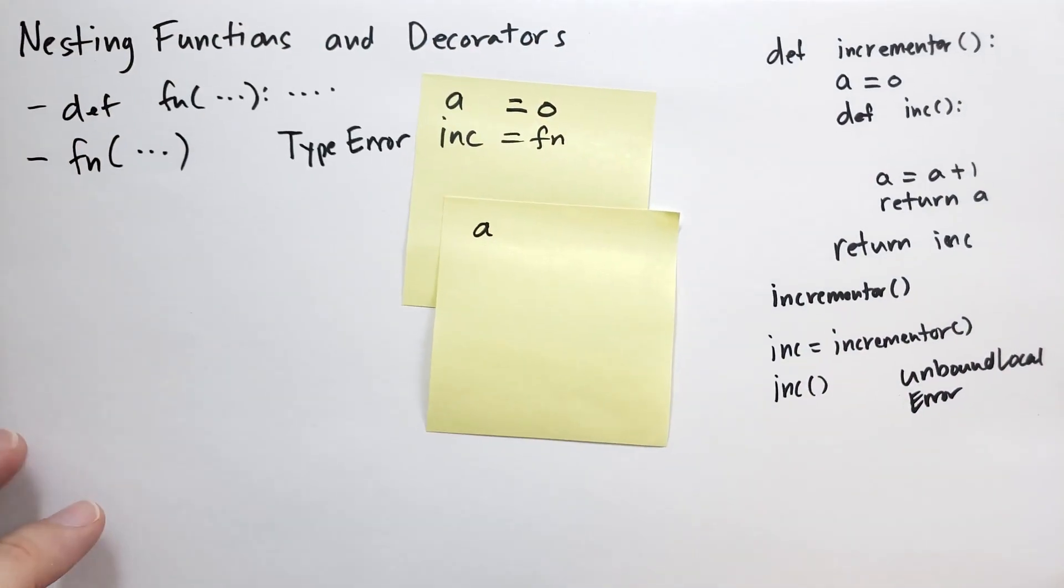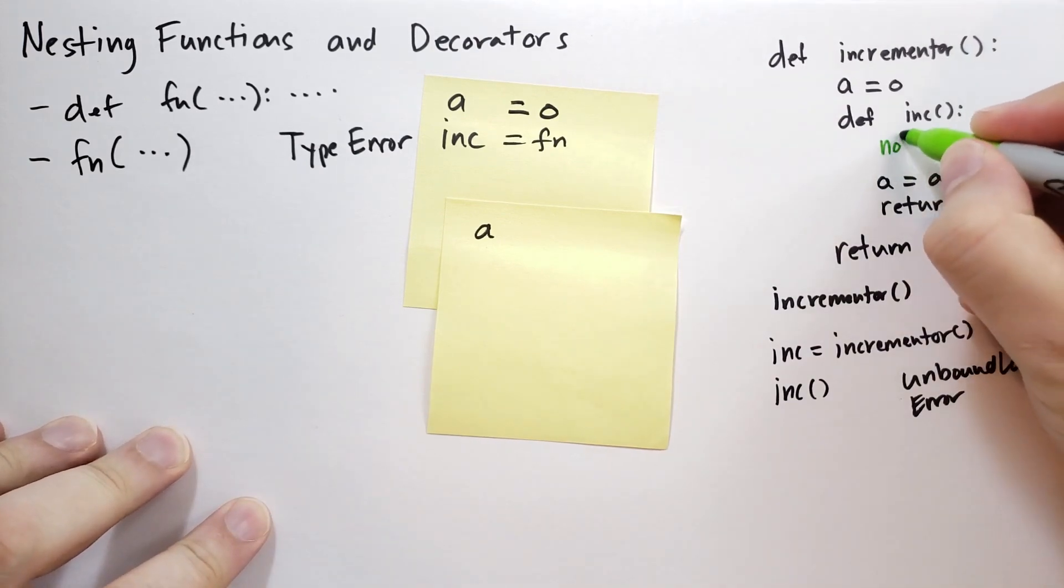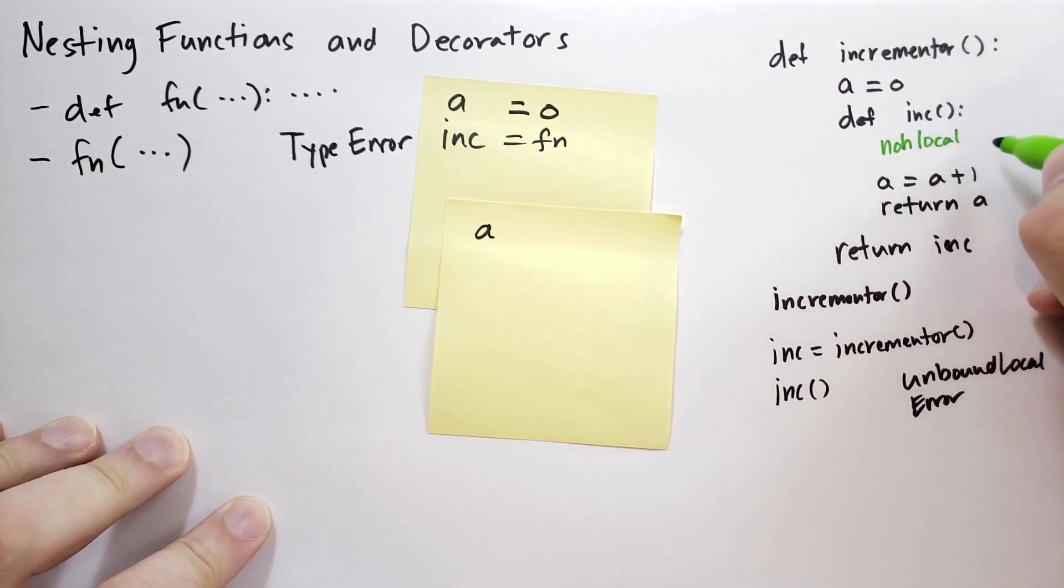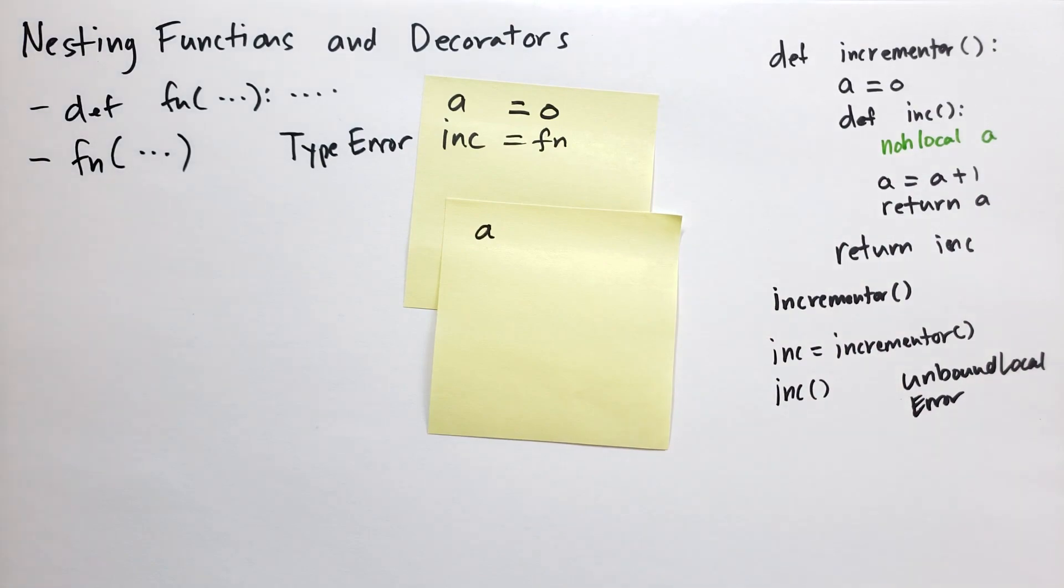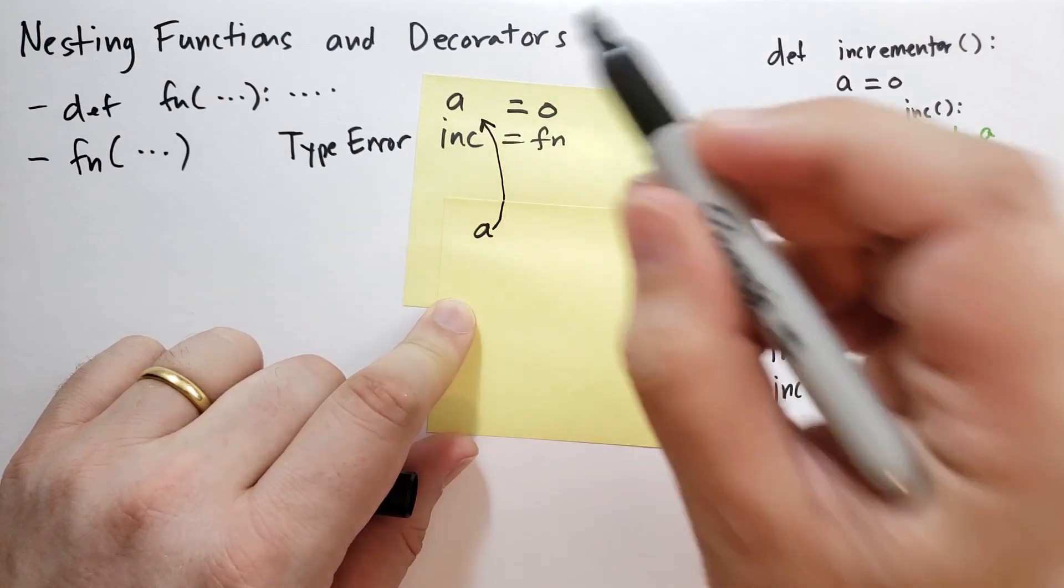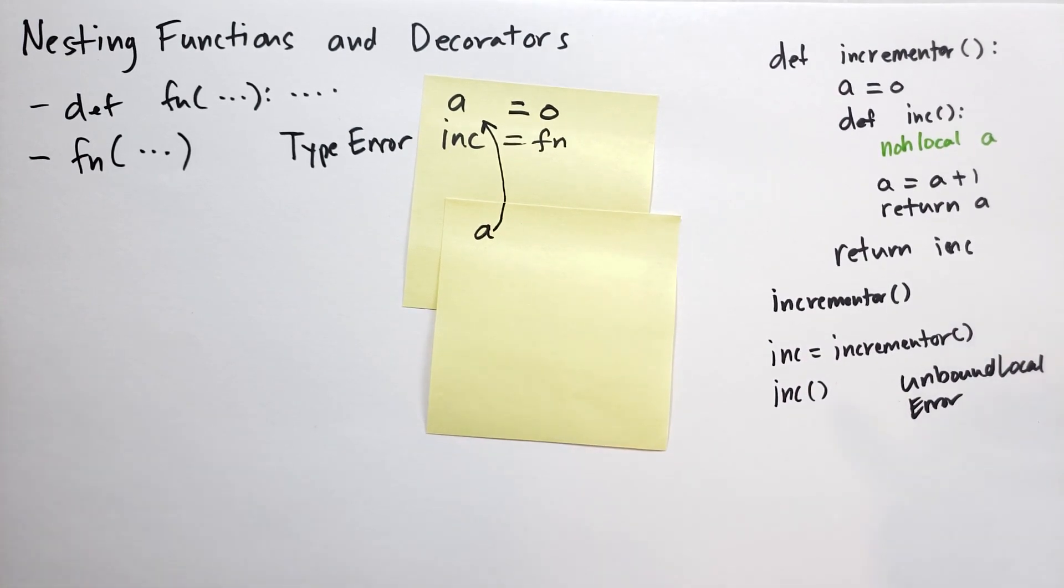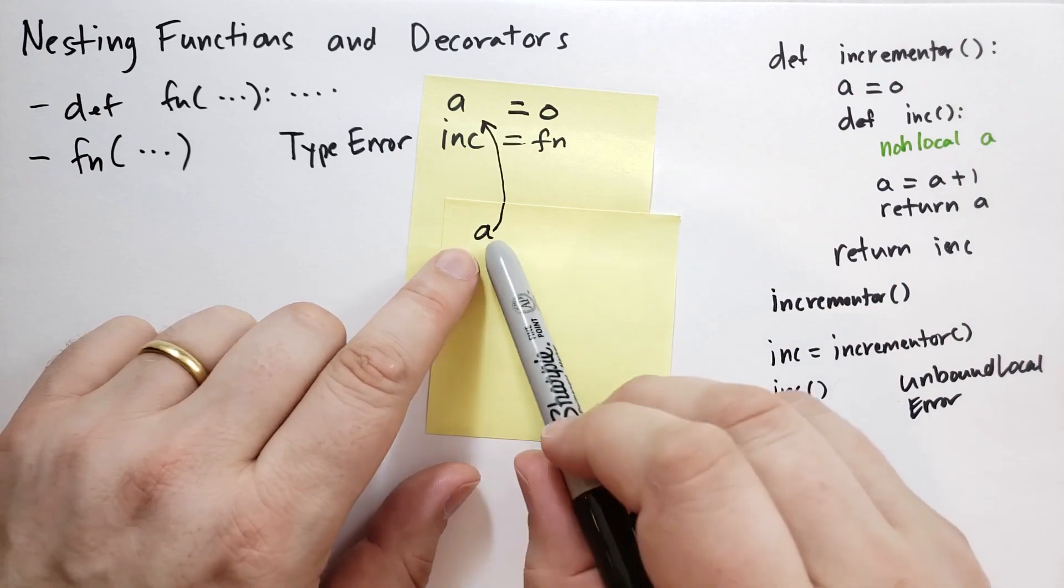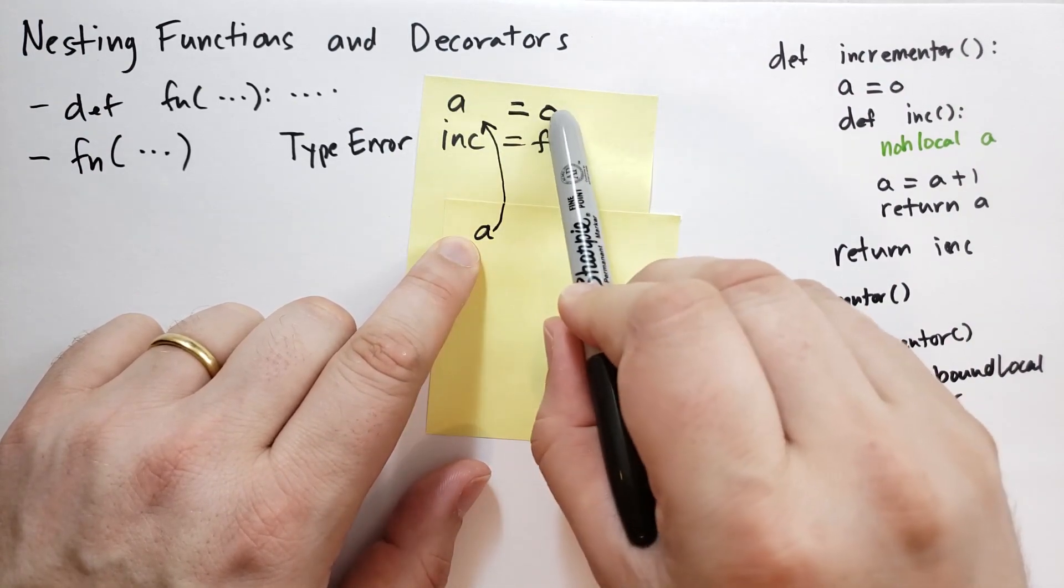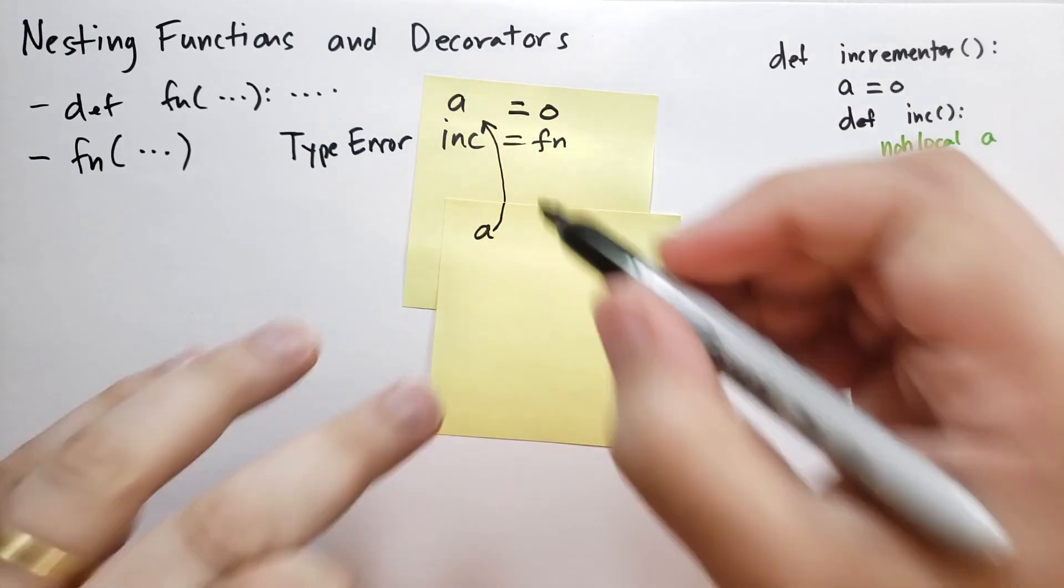Now, how do we fix this? Well, it used to be in previous versions of Python, we had to do a rather strange trick to fix this, but nowadays with Python 3.7, we can write this statement, non-local a. And what non-local a does is it tells Python, when it calls this inc function, it says the a here is actually the same as that a there. Just like we did with the global statement, global variables, we can do that here. And so when it says a equals a plus one, well, it says what's a, it looks up in that namespace, it says a is zero, so a plus one is one, and so now it's going to assign to a the value one.